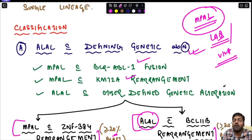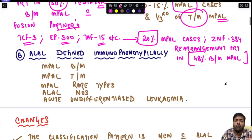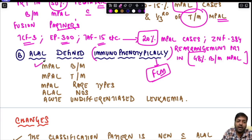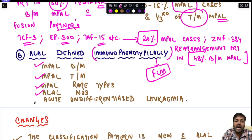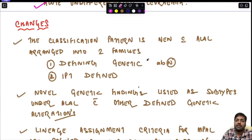The second major group is acute leukemia of ambiguous lineage defined immunophenotypically, mainly with the help of flow cytometry. Under this heading we have: MPAL B-lymphoid or myeloid type, MPAL T-lymphoid myeloid type, MPAL rare types, acute leukemia of ambiguous lineage NOS, and acute undifferentiated leukemia.